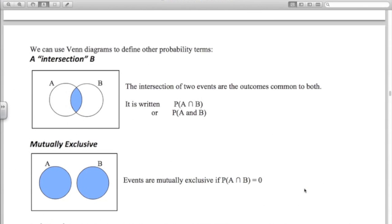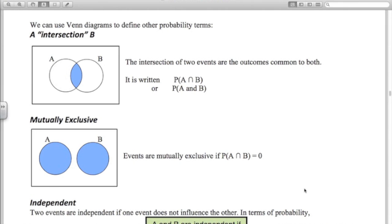Some definitions here. Intersection. You will have seen this in sets in IGCSE. The intersection of two events is that area there. It's said, probability of A and B. It's the upside down U thing here. Probability of A intersection B. Mutually exclusive means that the two events do not have an intersection. So the definition of mutually exclusive is the probability of A and B happening is zero.